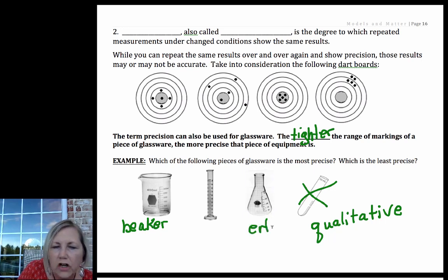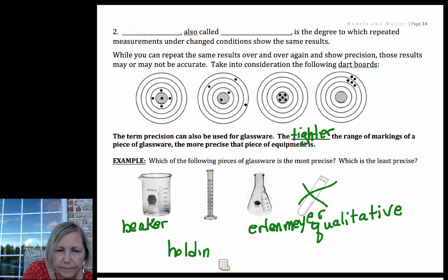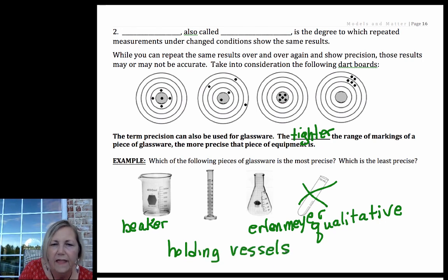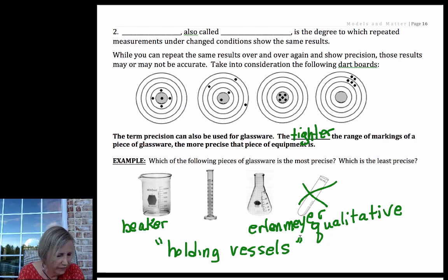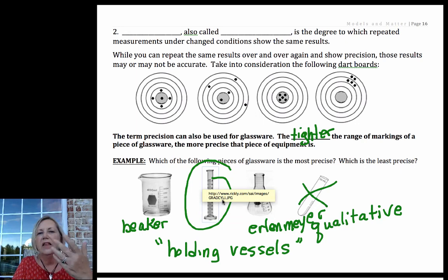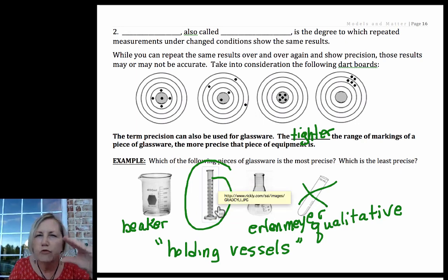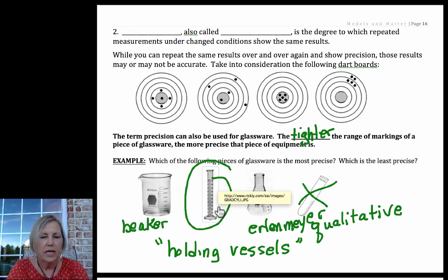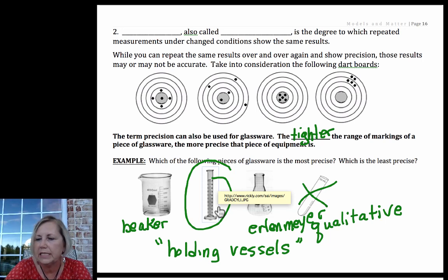Beakers and Erlenmeyer flasks are not precise nor accurate — I like to call these holding vessels. They're what we mix things in or heat a mixture up, not accurate measuring devices. A graduated cylinder, by contrast, has markings going by 1s or 10s depending on the size, with each tiny line at the 1s place — a very tight range of numbers. Beakers, Erlenmeyer flasks, and test tubes are all qualitative and are not used for quantitative measurements in a lab.